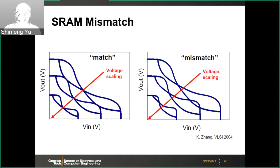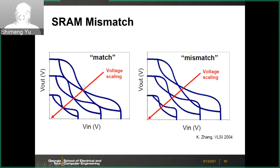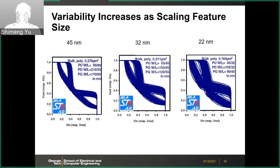One key challenge in SRAM scaling is mismatch. The butterfly curve shows that in the matched case the SRAM is perfect — symmetric left and right branches — so the metastable cross-point follows the 45-degree diagonal. But if there is mismatch, meaning the threshold voltages of the two inverters differ, the smaller noise margin becomes a further challenge for SRAM scaling.